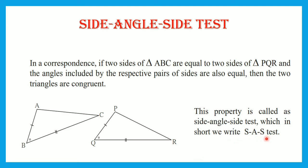Let's understand this test by using a figure. Here triangle ABC and triangle PQR are shown. Side AB of triangle ABC is congruent with side PQ of triangle PQR. Side BC of triangle ABC is congruent with side QR of triangle PQR. And angle B, included by sides AB and BC, is congruent with the angle included by sides PQ and QR — that means angle B is congruent to angle Q. Therefore, these two triangles are said to be congruent by the SAS test of congruency.